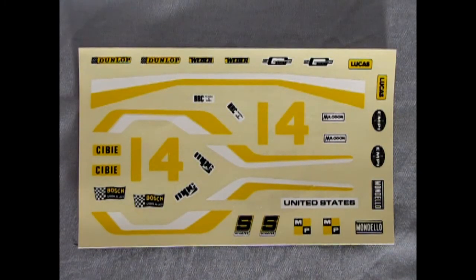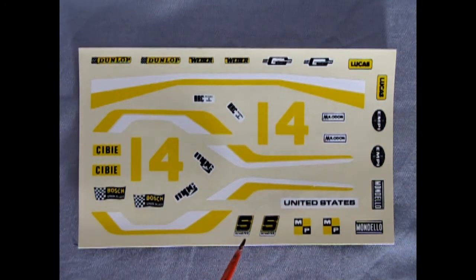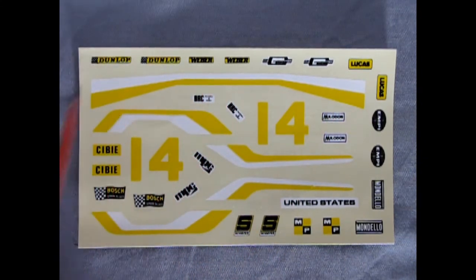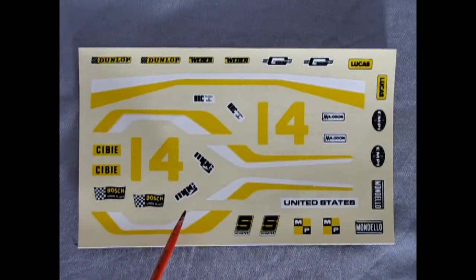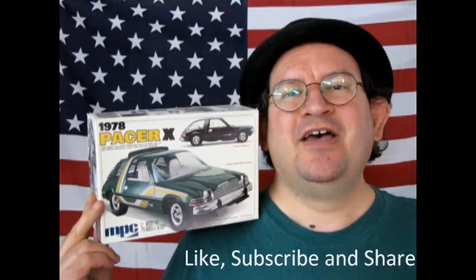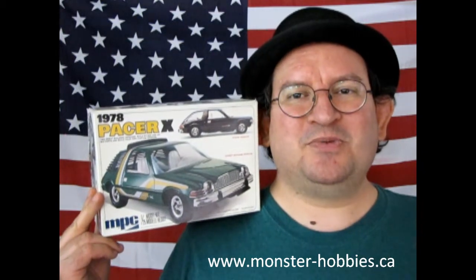So here we have our rally decals and we've got a cool company Milodon on here and we've got Schiefer MP Mondello there's the EMPI Fair Racing in Europe Lucas is our headlight we got Mr Gasket Company Weber Dunlop tires CB lights and Bosch spark plugs as well as the MPC logo and you get the cool white and yellow stripes as well as the number 14 to put on your cool rig. Well I sure hope you enjoyed our great review of the 1978 American Motors Pacer X by MPC and if you love these great videos and unboxing reviews don't forget to like subscribe and share this channel with all your friends and family pound that notification bell so that every time I make a new video you are the first ones to see it and model kit builders don't forget to check out our supply of available model kits at www.monster-hobbies.ca you won't be disappointed I hope but anyway until next time keep it AMC and keep it weird.